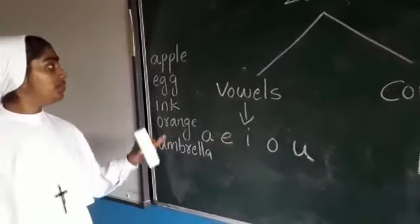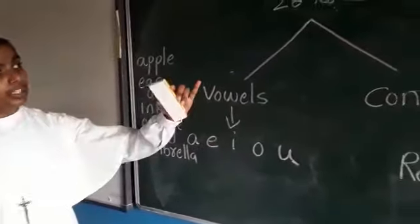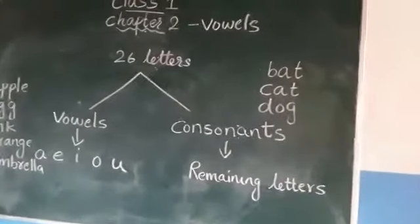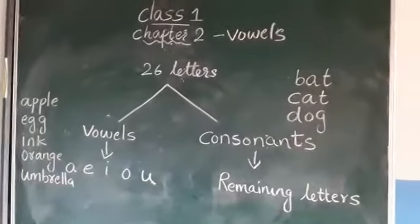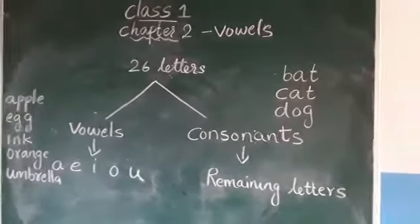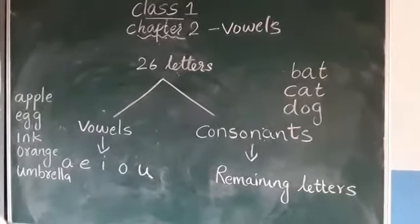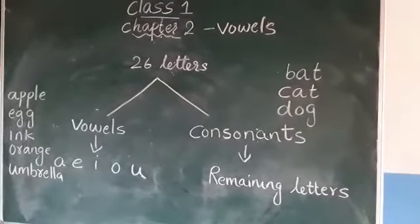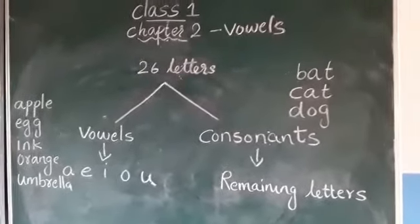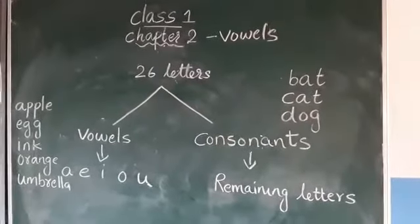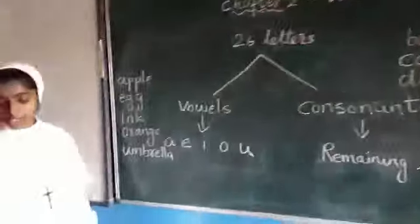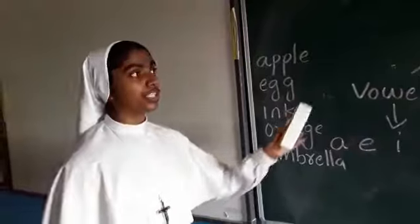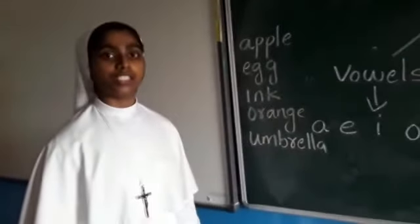Words begin with vowels. Words begin with consonants. Did you all follow? What are the vowels? What are the consonants? Page number 8 — here in your textbook, page number 8, you have to write. There are two columns: words beginning with vowels and words beginning with consonants. You have to see the first exercise. There are so many words given — tree, pen, ink, and many more words. From there you have to write words beginning with vowels and words beginning with consonants. Okay, thank you.